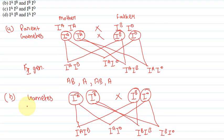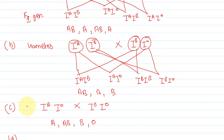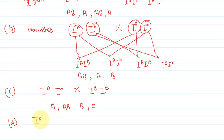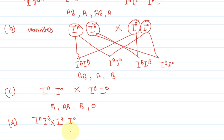Now option D is IA, IB and IA, IO. This is quite similar to option B. The father's genotype is IA and IB, and the mother is IA, IO. So the progeny will have two A combinations and one B combination. The progeny blood groups will be AB, B, and two B blood groups, and one A. This option will be rejected again.